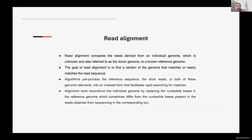Read alignment: you got your reads derived from an individual's genome, but you don't know that genome. What you want to do is align — place those reads onto the reference genome. The goal of read alignment is to find the section of the genome that matches, and very importantly, sometimes nearly matches the read sequence. Why would it be nearly perfect match and not always perfect? Either individual SNPs or sequencing errors — you need to differentiate between those two fundamental reasons.